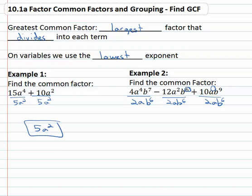Which means I could divide each and every term by 2ab to the sixth. This is the greatest common factor, or the largest thing that I can divide each term by without having remainders or fractions.